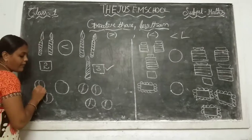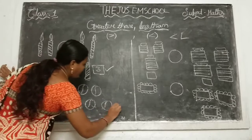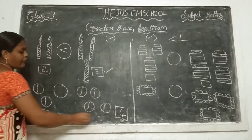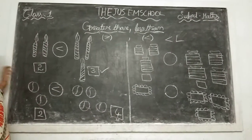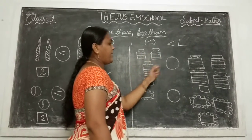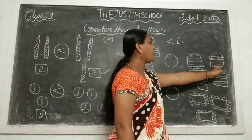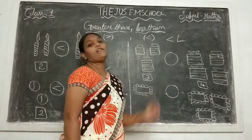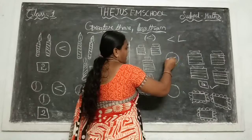Next one — how many here? 2. And here: 1, 2, 3 and 4. So we compare 2 and 4. 4 is the big number, so we will put less than. The open mouth is to the big number side. And here: 1, 2, 3 on one side and 1, 2, 3, 4 on the other side. Now compare 3 and 4. 4 is the big number, so we will put less than.